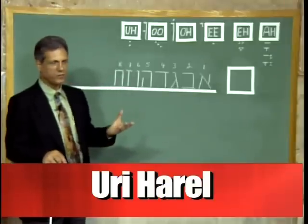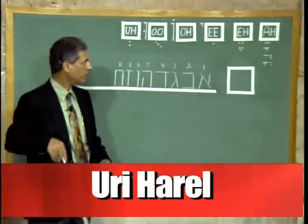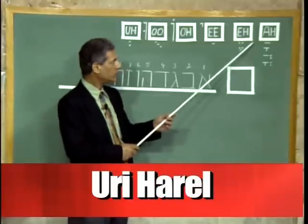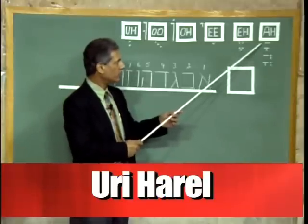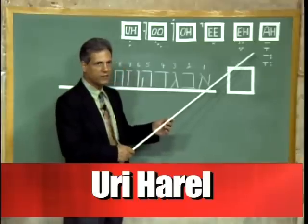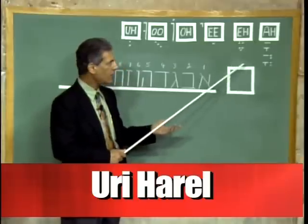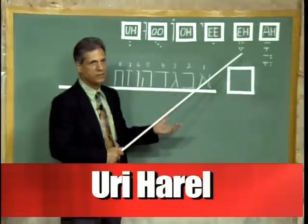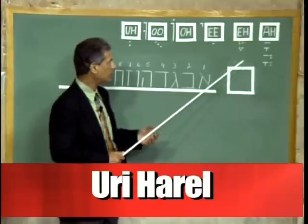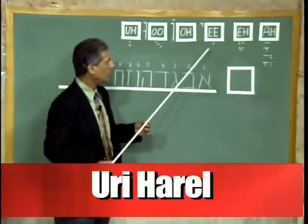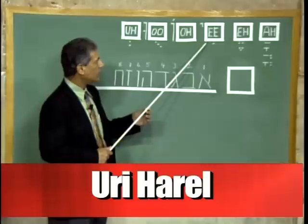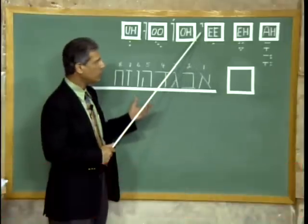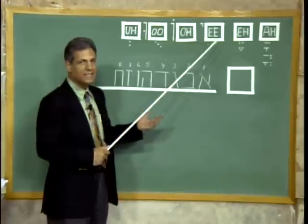Let's go over the vowels quickly again. Here is the first one — it's an A vowel. When you have a horizontal line underneath the letter, that will give you an A sound. When you have two dots or three dots under a letter, that also gives you an A sound. When you have a dot underneath the letter and a Yud next to it, that's an E sound.